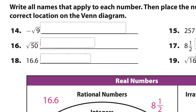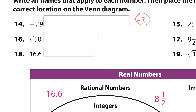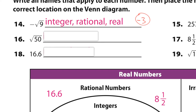We're looking at the opposite of the square root of 9. The square root of 9 is 3, so we're talking about negative 3. Negative 3 is an integer, and if it's an integer, then it's also a rational number and a real number. So the answer is integer, rational, and real.